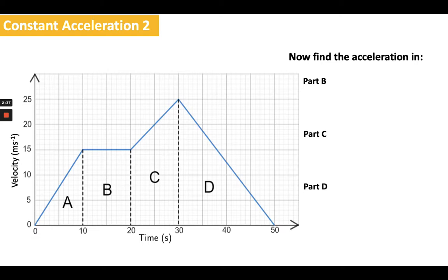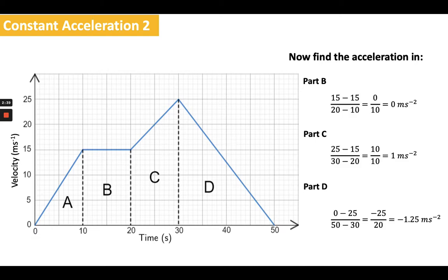So those three: we should have an acceleration of zero meters per second squared for part B. We can kind of guess that — if the gradient is the acceleration and there's no gradient, there's a flat line, so the acceleration must be zero. For part C, I've got a gradient of one meter per second squared: the change is 25 minus 15 over 30 minus 10. And lastly, I've got negative 1.25 for part D, so the gradient here is negative 1.25.